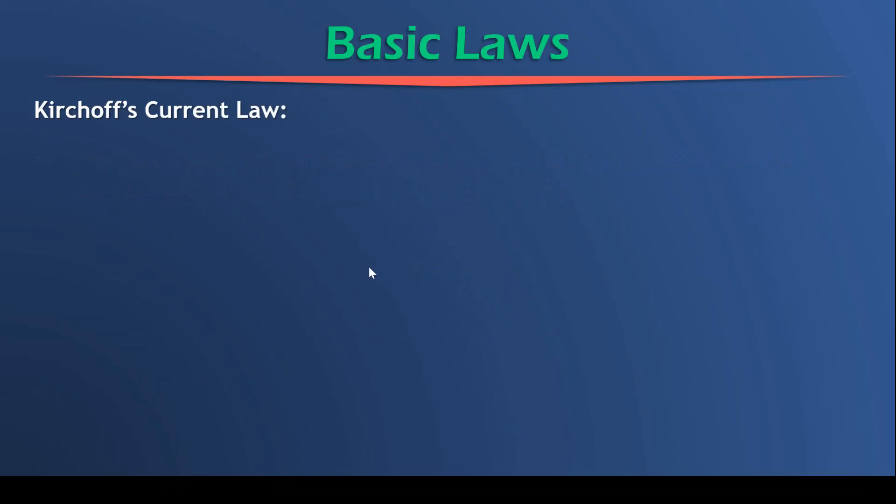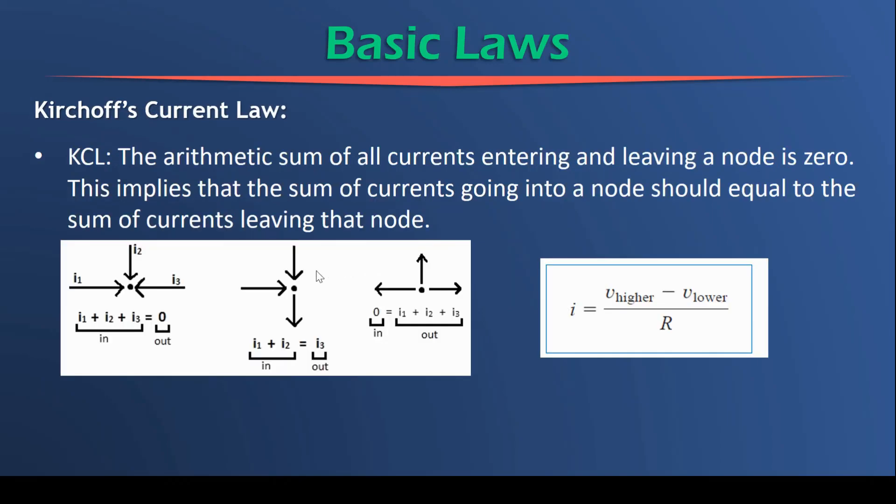What about Kirchhoff's current law? So with KCL, we know that the arithmetic sum of all currents entering and leaving a node is zero. This implies that the sum of the currents going into a node must equal the sum of the currents leaving a node. So on the diagram, we have three nodes. And in these three nodes, we're all denoting the direction of currents.